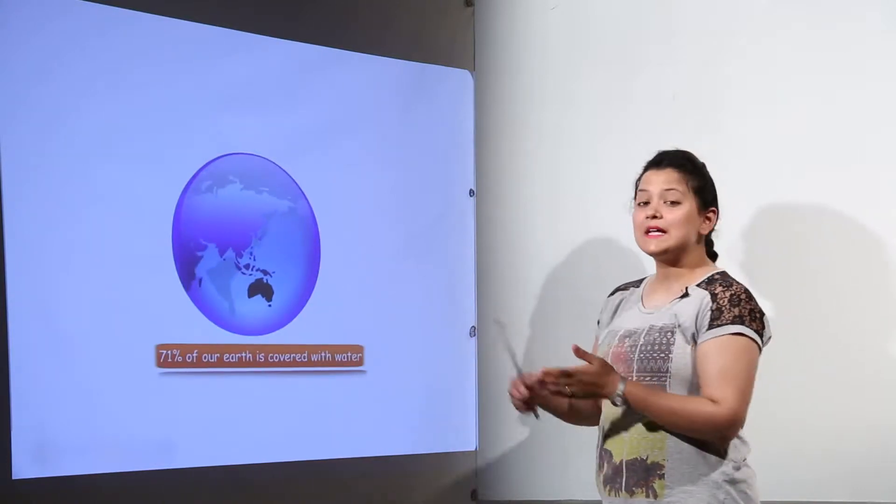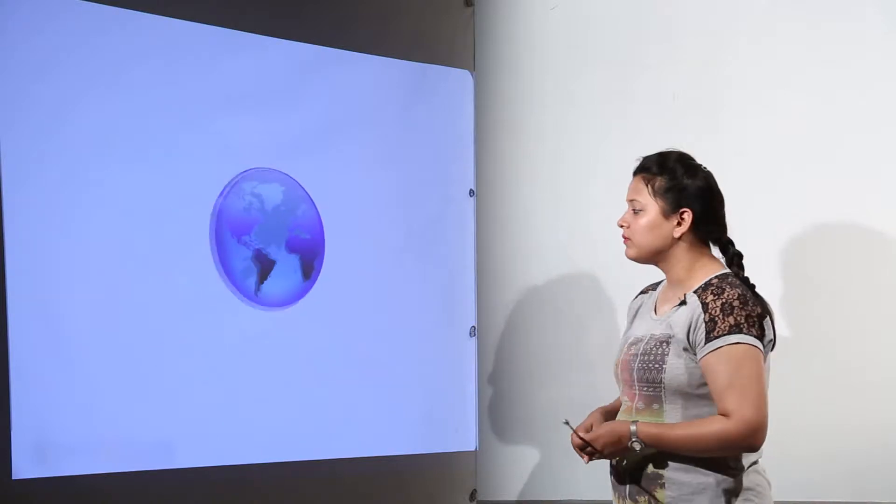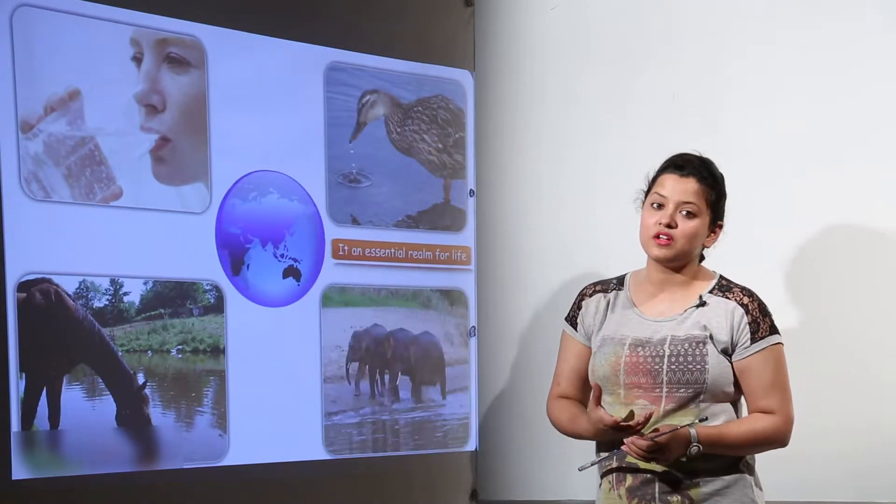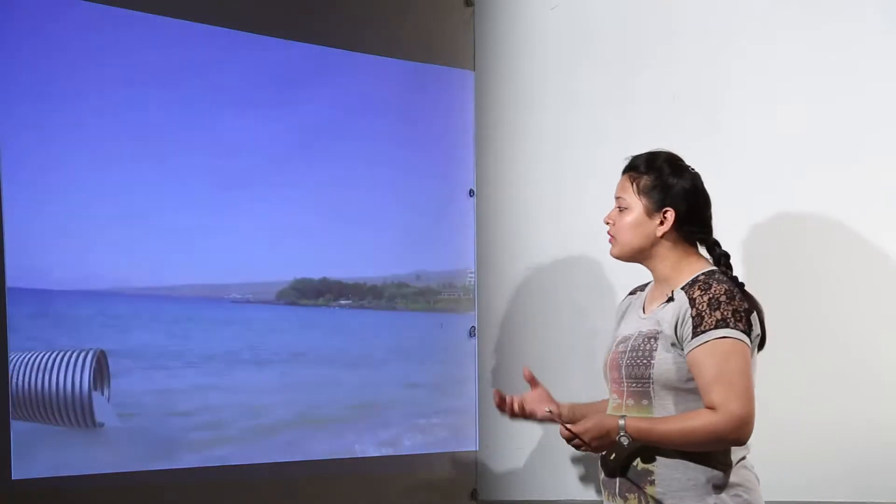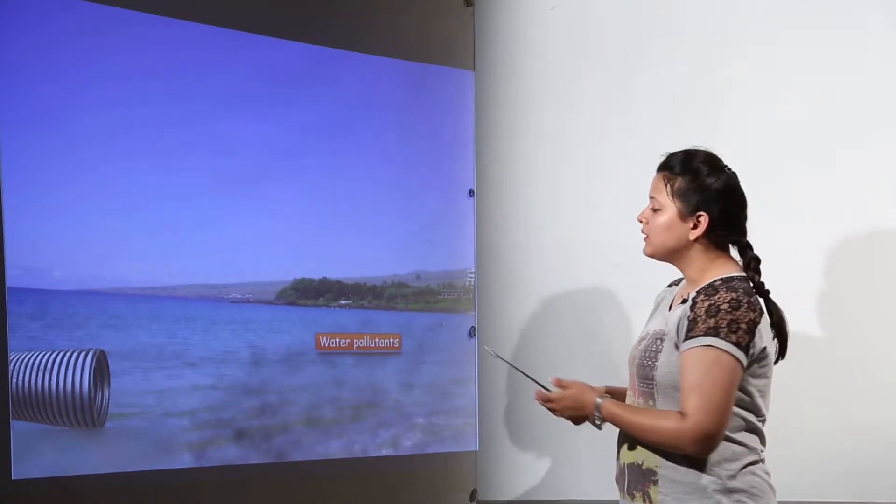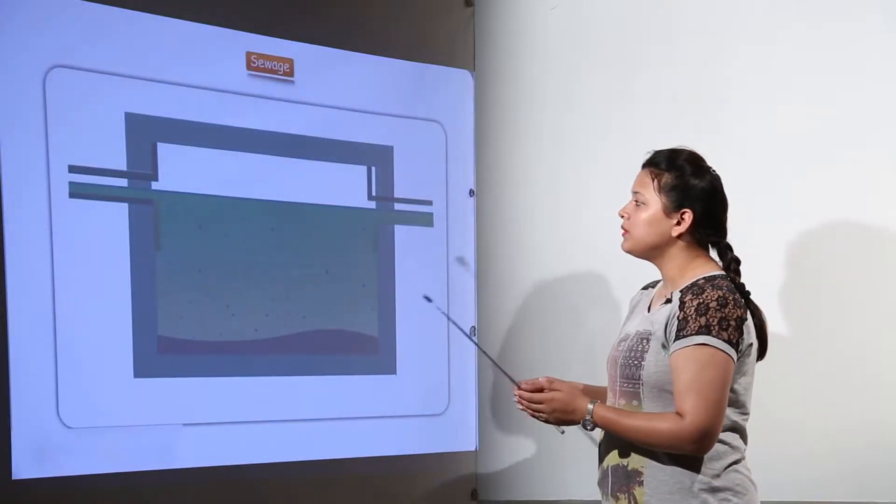Do you know that 71% of the earth is covered with water? That is why it is so much available for us, and we are dependent on water for every minute thing. But even this water is getting polluted. That pollution is due to water pollutants.